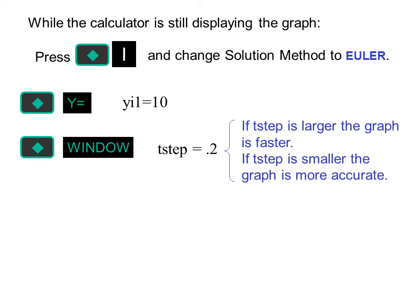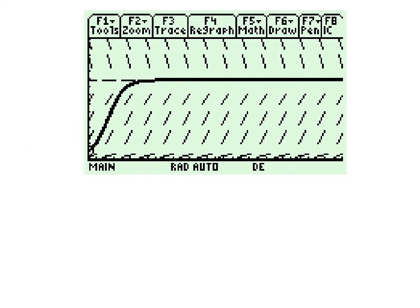If t-step is larger, the graph is faster. If t-step is smaller, the graph is more accurate. Then press diamond graph. And we can watch the calculator draw the curve.